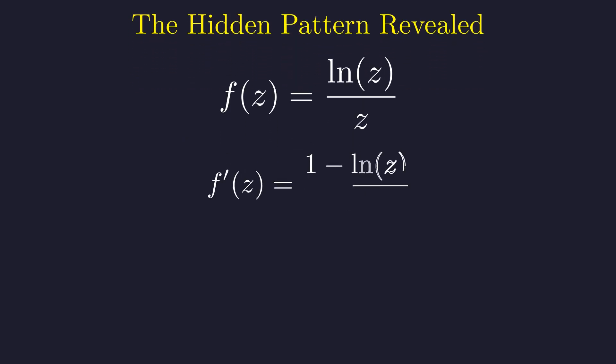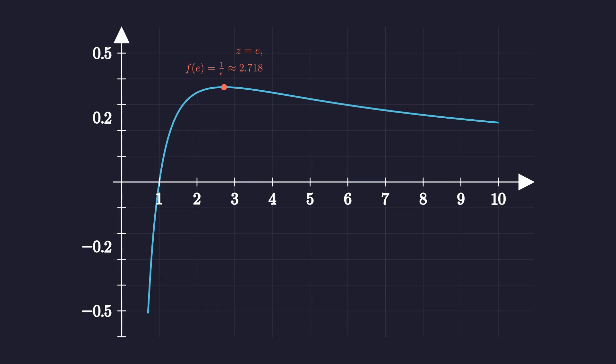The derivative shows us exactly what's happening. This function increases, reaches a maximum, then decreases forever. Look at the shape of this curve. It tells the whole story. The curve rises and then falls. The peak occurs at z equals e, about 2.718. This is the key insight that will solve our puzzle.